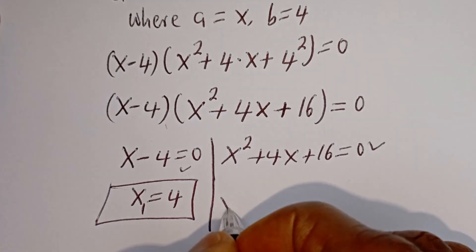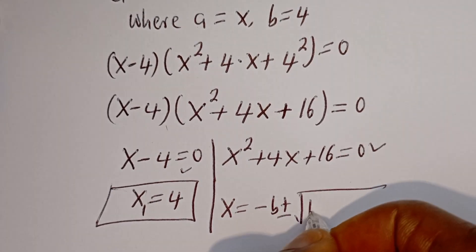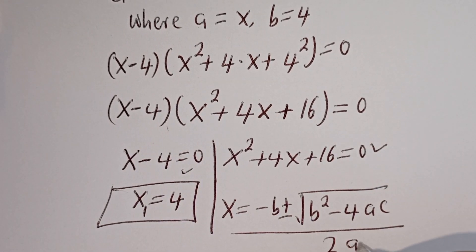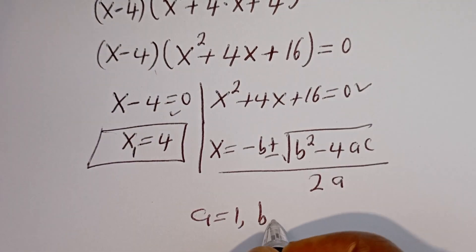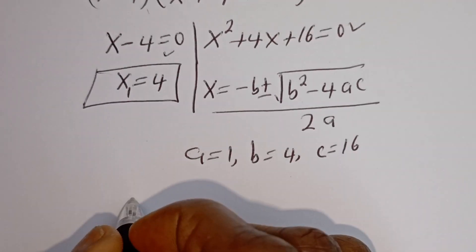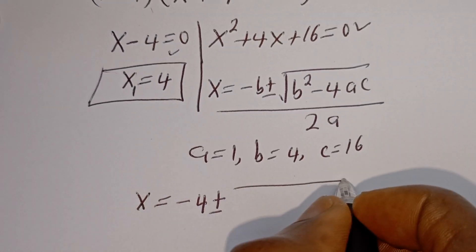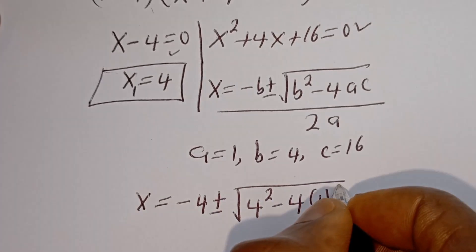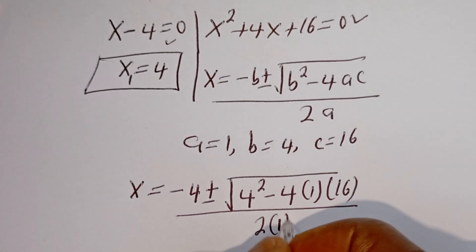Let's solve this using the quadratic general formula: s is equal to minus b plus or minus square root of b squared minus 4ac, over 2a. From this equation, a is equal to 1, b is equal to 4, c is equal to 16. Now s is equal to minus 4 plus or minus square root of 4 squared minus 4 multiplied by 1 multiplied by 16, over 2 multiplied by 1.